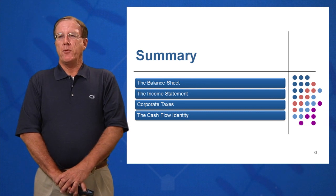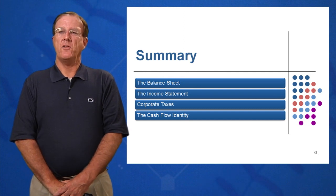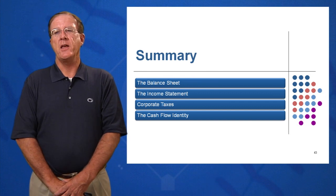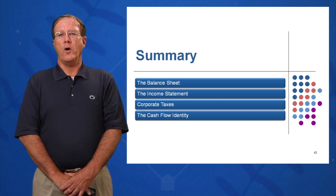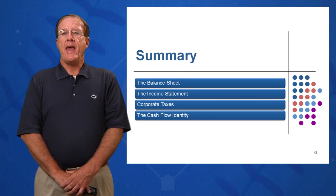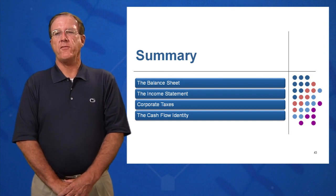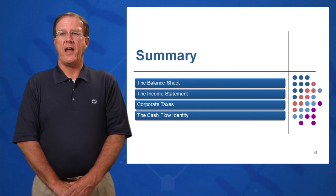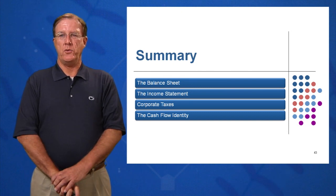From this chapter, you should now be able to understand and read a balance sheet, understand an income statement and what it contains, understand corporate taxes and the various tax rates imposed on corporations, and finally — the most important — the cash flow identity: cash flow from assets equals cash flow to stockholders plus cash flow to creditors, including what it means and how to calculate it. This sums up session two.